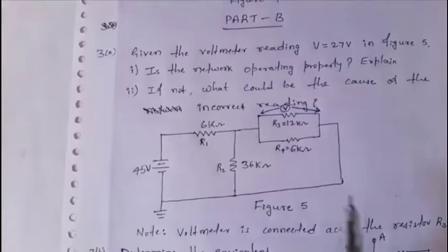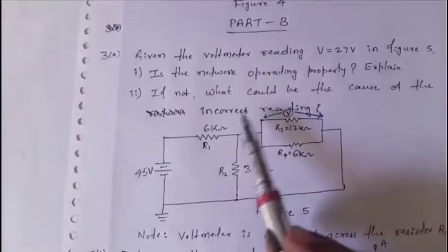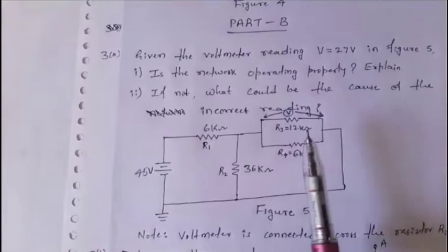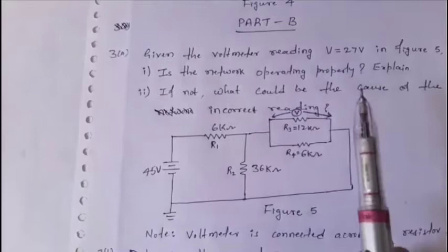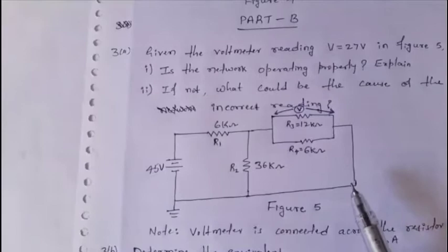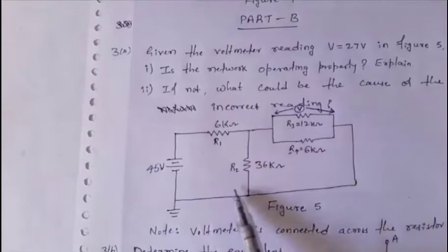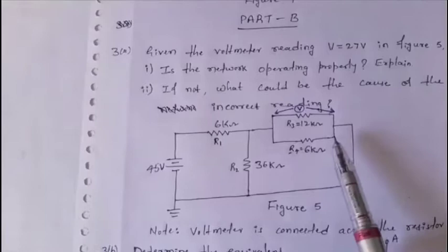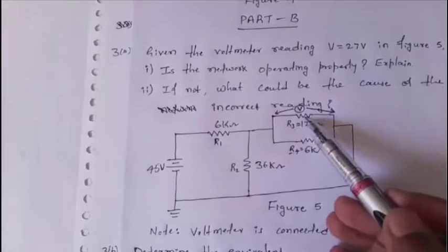Problem 4: a voltmeter reads v = 27 V. Is the network operating properly? We must first calculate the theoretical voltage across r3 or r4. If the theoretical value equals 27 V, the network is fine; if not, we must identify the fault.